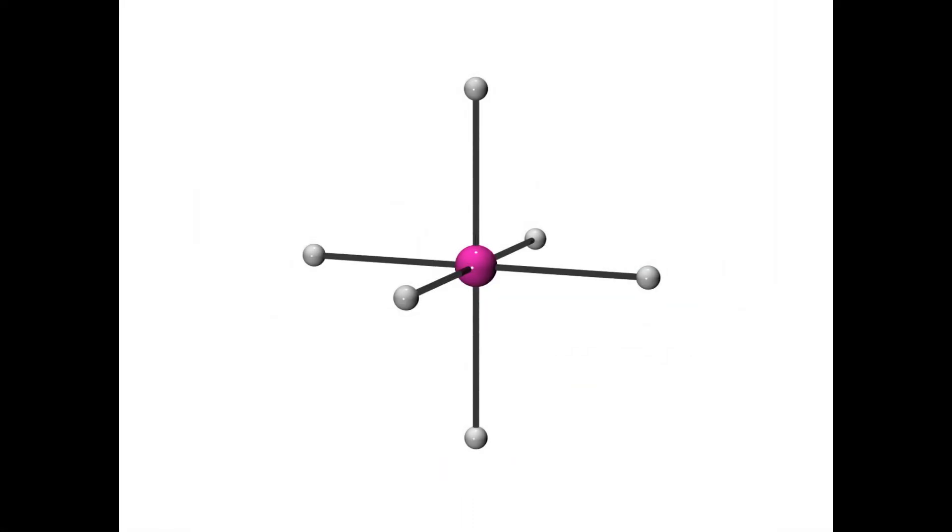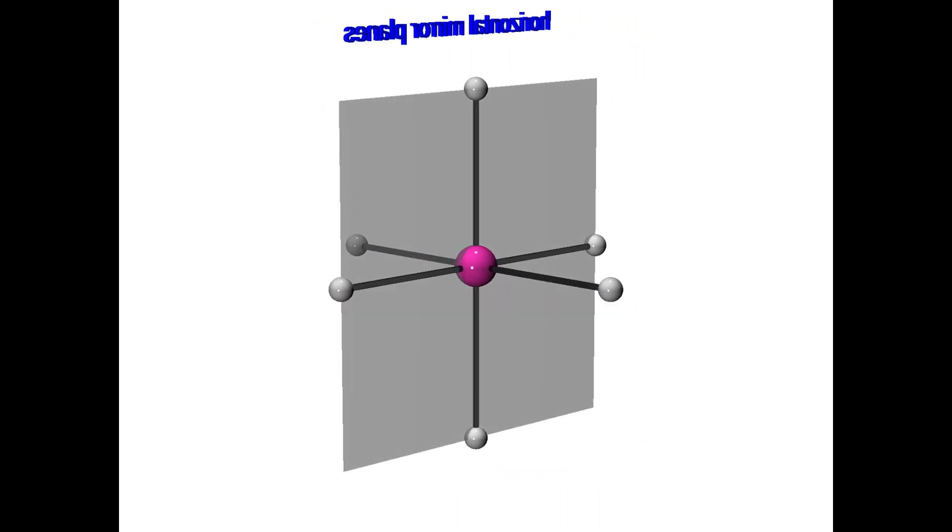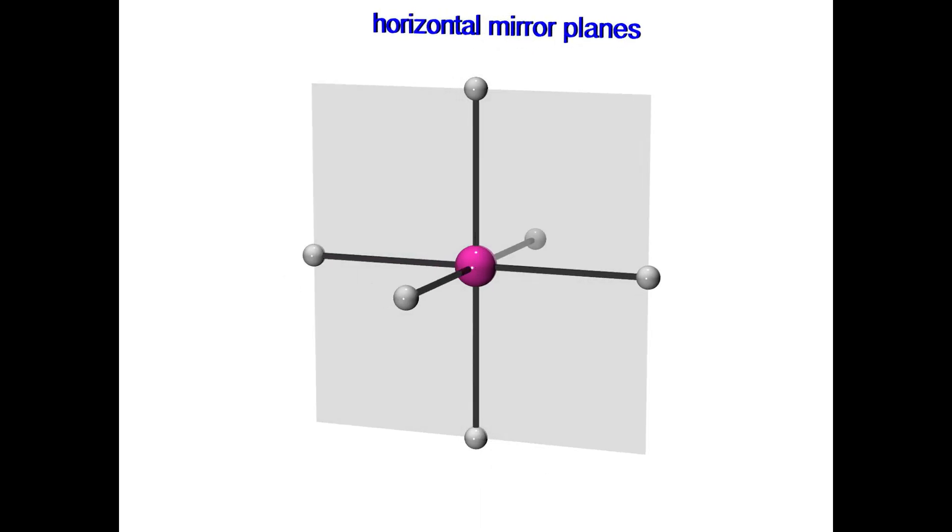The next symmetry elements we will identify are the horizontal mirror planes. Remember that the term horizontal has nothing to do with the molecule's orientation in space. A horizontal mirror plane bisects the principal axis. In an octahedral molecule there are three perpendicular principal axes. Those are the C4 axes. So here is one of the horizontal mirror planes. There are two more horizontal mirror planes for a total of three.